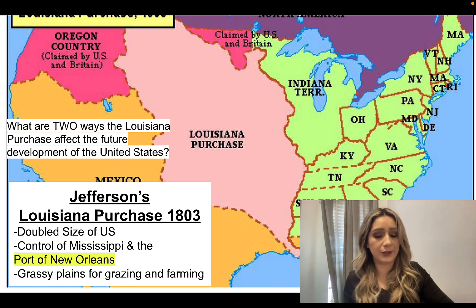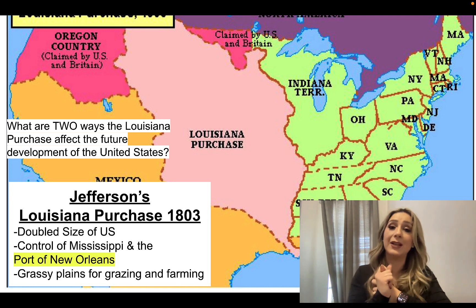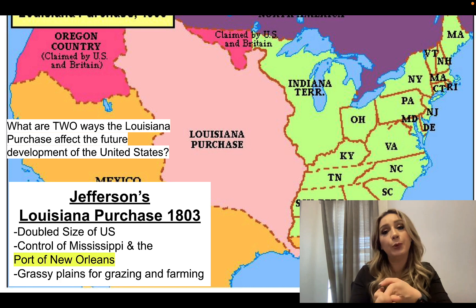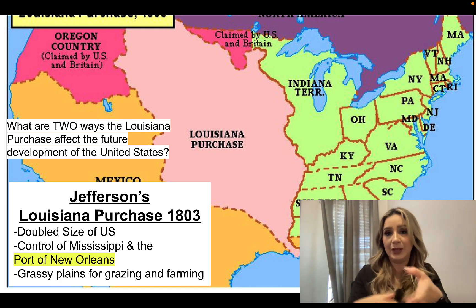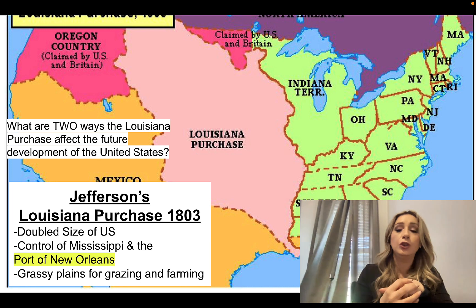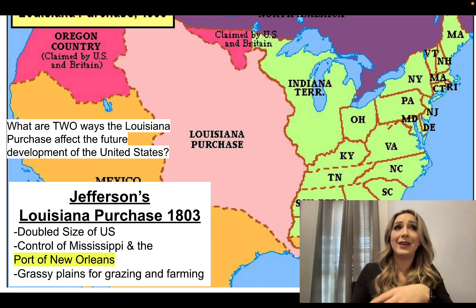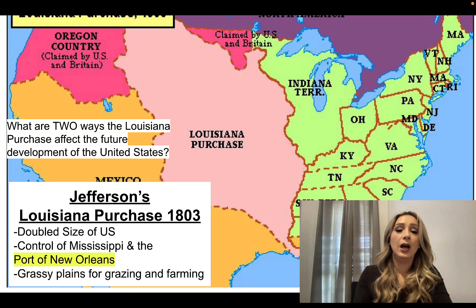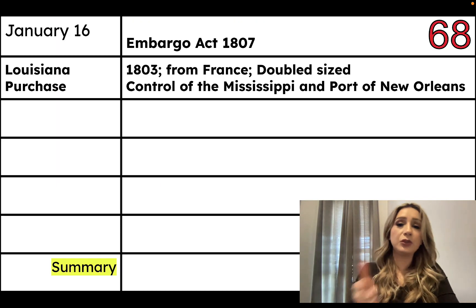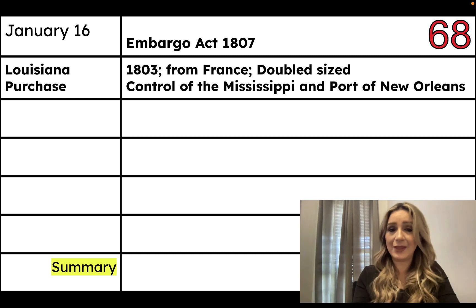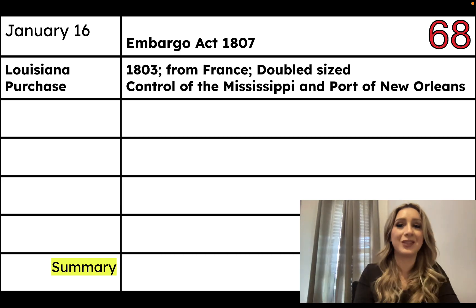Some things you should have answered: having control of the port of New Orleans now allows us to import and export, or trade with foreign countries — opening up to foreign markets. You could have answered that we can transport goods faster and easier up and down the river, or that now we have all of this land for farming, so the United States can develop economically because of it. Now let's write this down and move on to learning about the last most important thing under Thomas Jefferson's presidency.